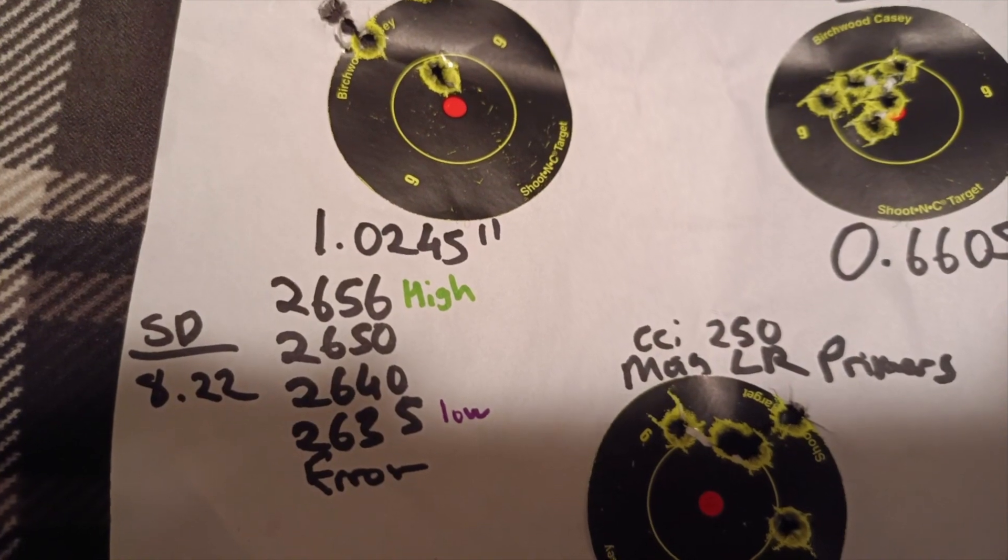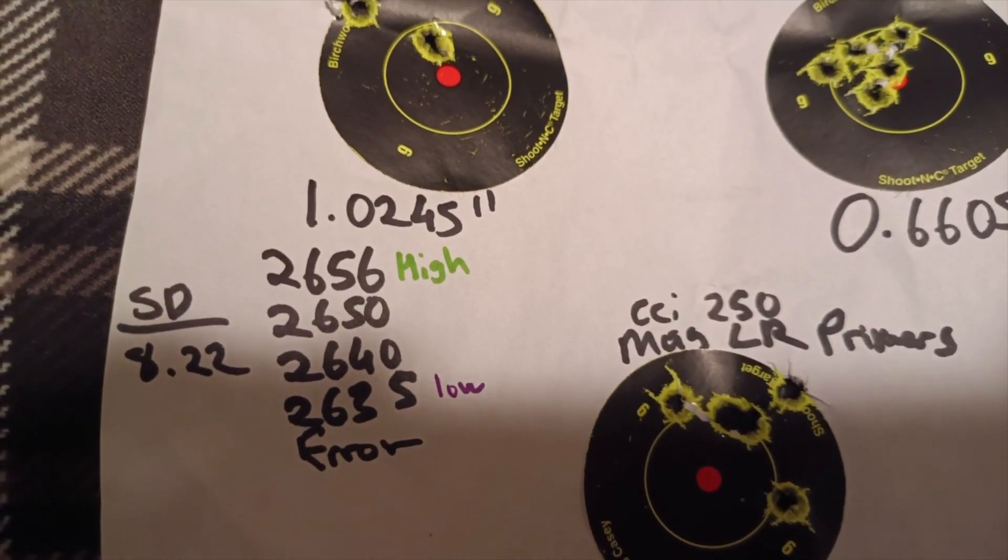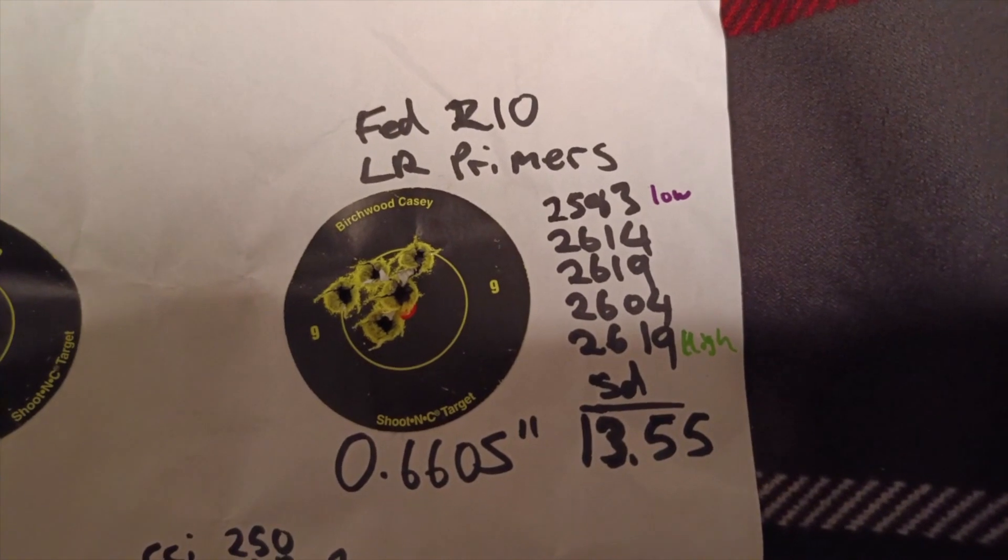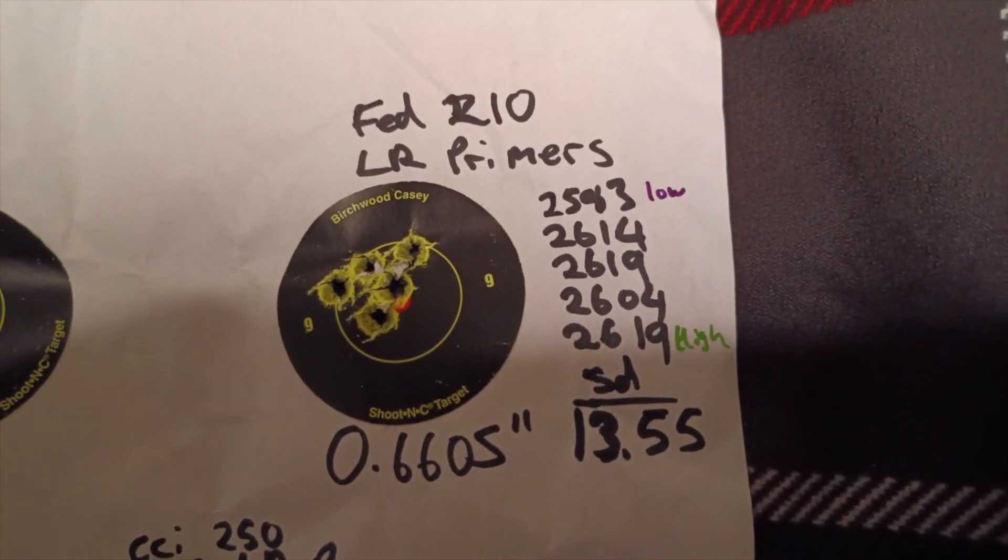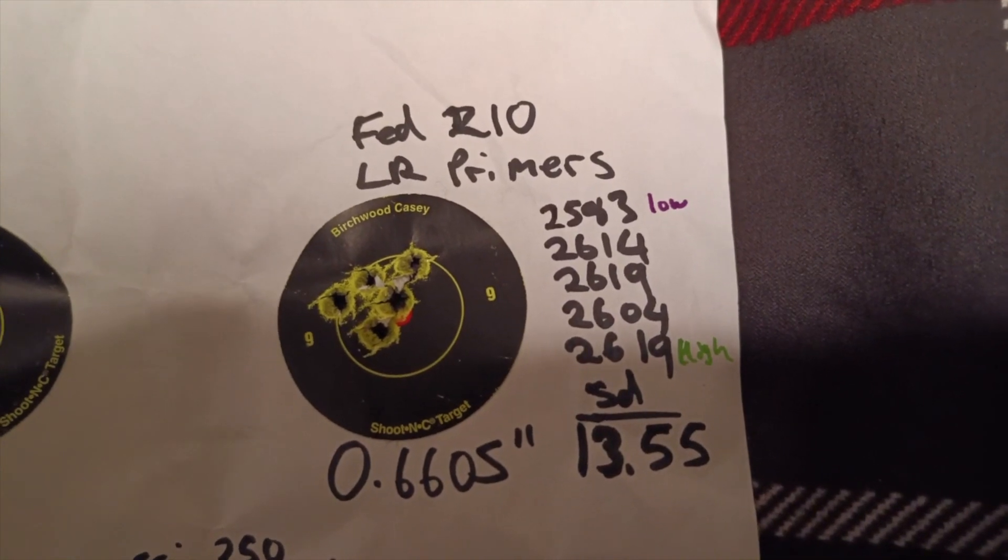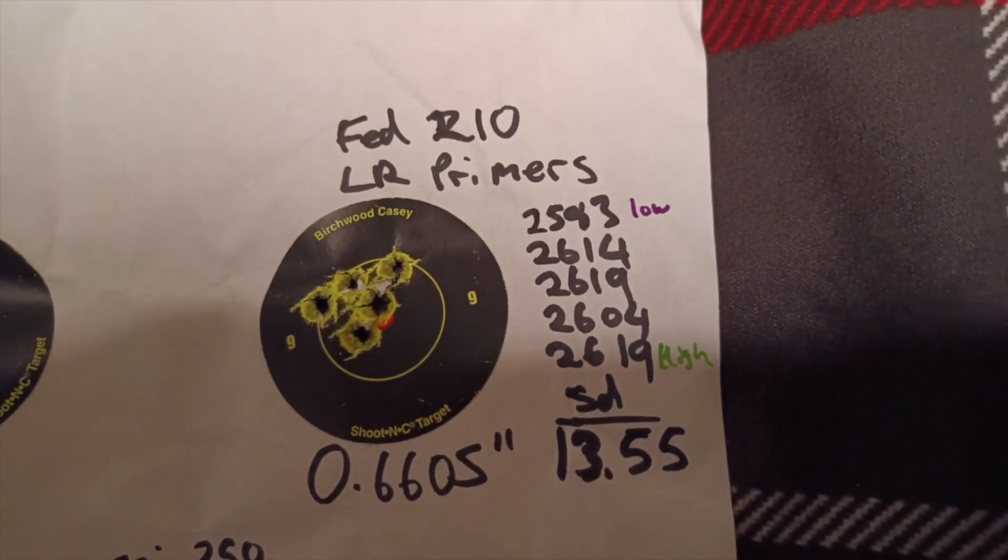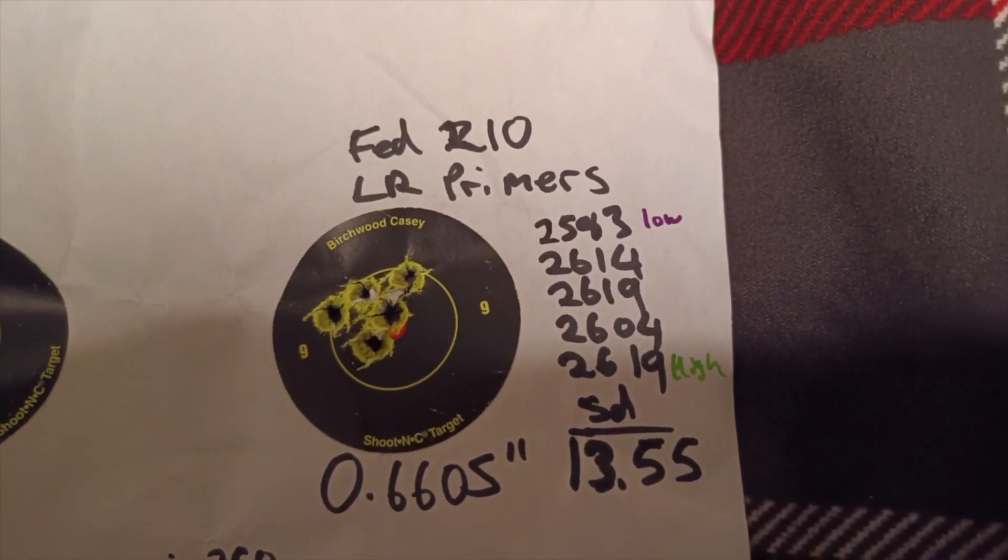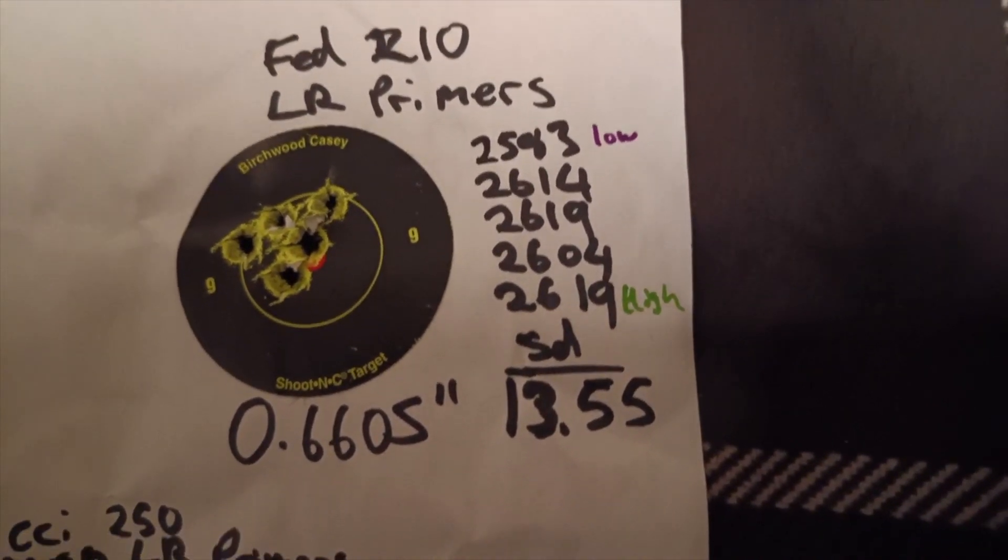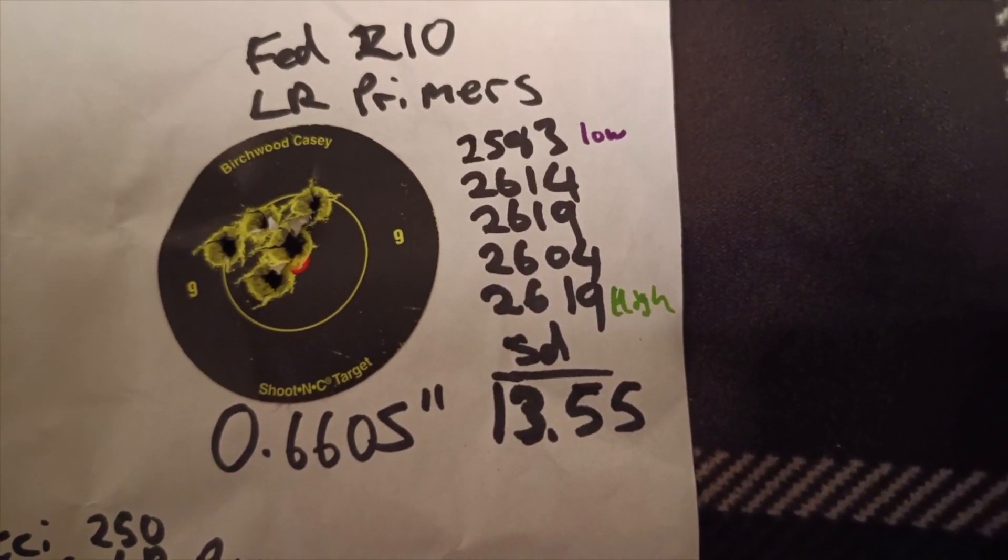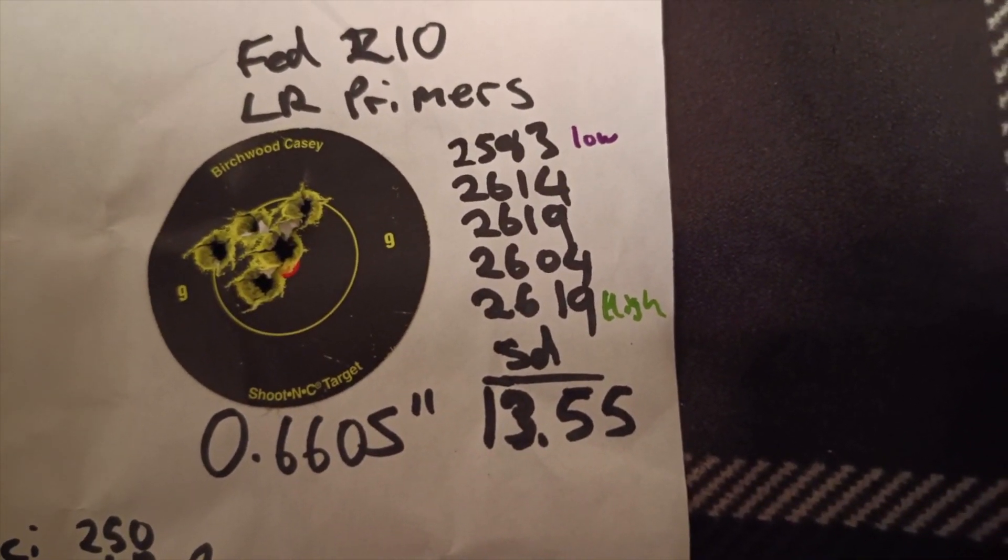Moving on over to the federal 210, these might be matched or they might not be matched, I'm not too sure. I don't think they're matched primers to be honest. Anyway, the low there was about 2583 and the high was 2619. Standard deviation was not that good but not that bad either at 13.55.